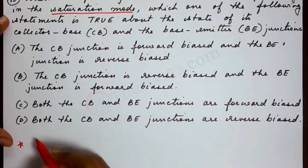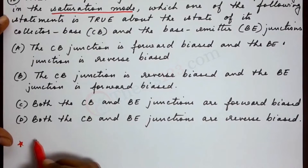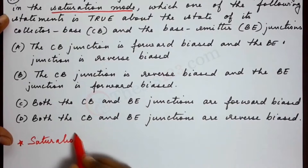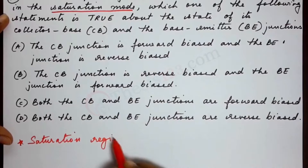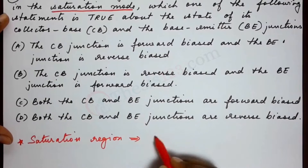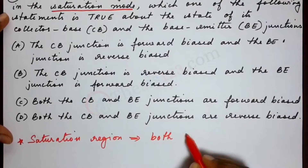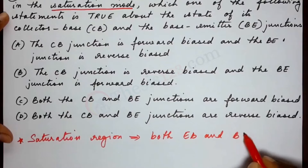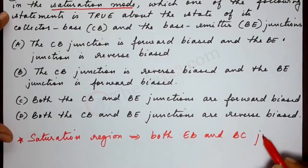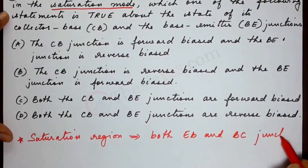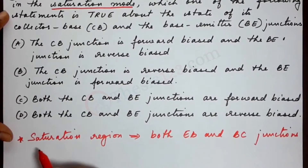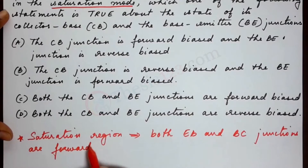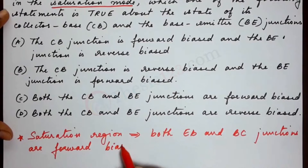So here is that important point — it's a fact. In the saturation region, both the emitter-base and base-collector junctions are forward biased.